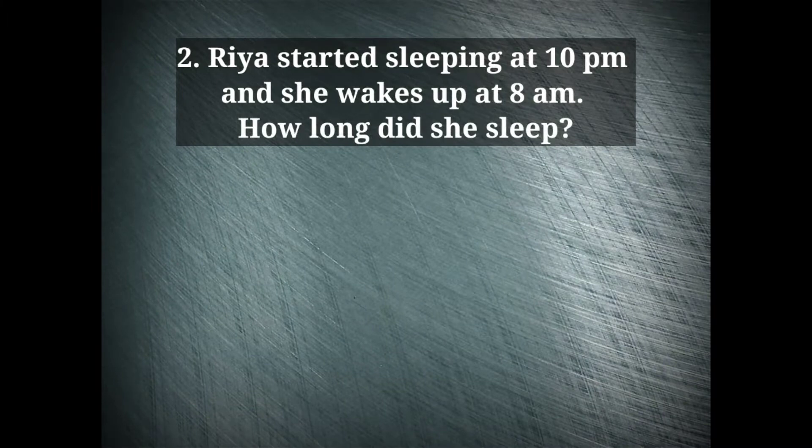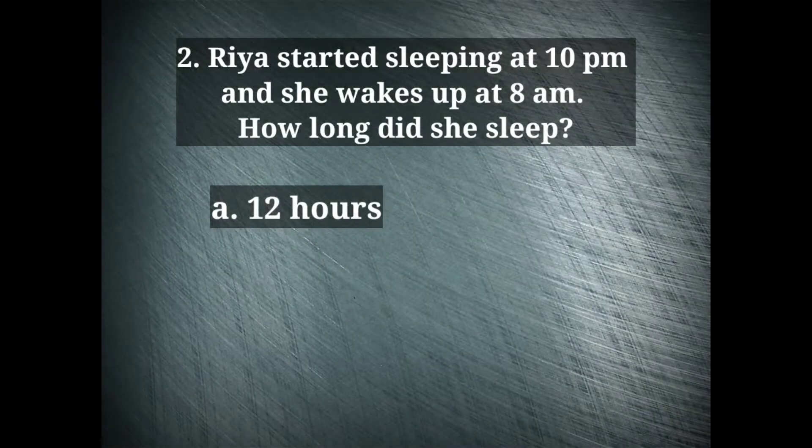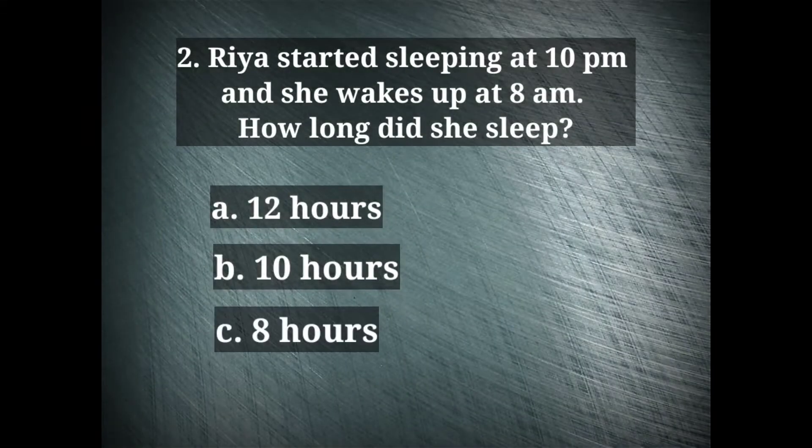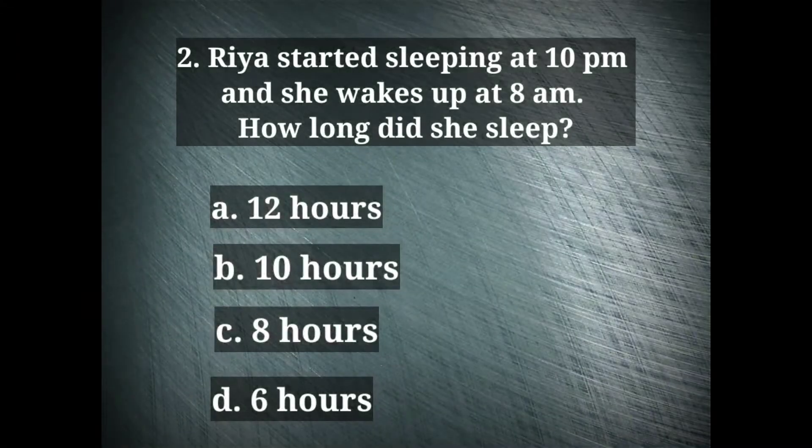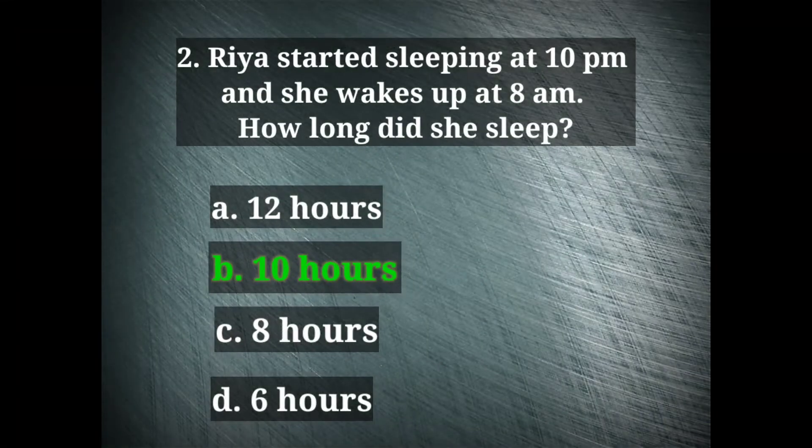Now question number 2 is, Rhea started sleeping at 10 pm and she wakes up at 8 am. How long did she sleep? The options are 12 hours, 10 hours, 8 hours and 6 hours. The correct option here is option B, 10 hours.